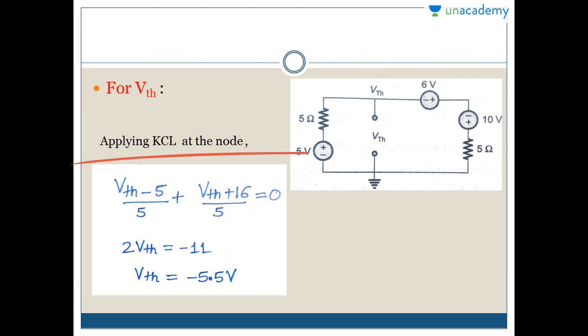Applying KCL at the node to find VTH. For the RL, just open circuit it. Apply KCL at the node - one current is going this side, one current is going that side. I'm writing VTH minus 5 divided by 5 ohm plus VTH plus 6. Adding these two voltages equals zero. On solving, you will get 2 VTH equals minus 11, and VTH equals minus 5.5 volts.